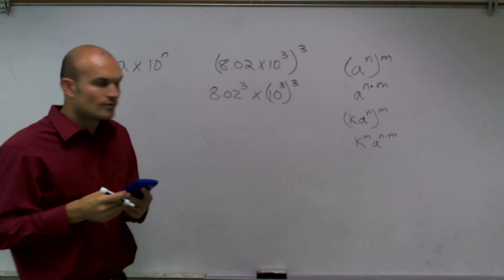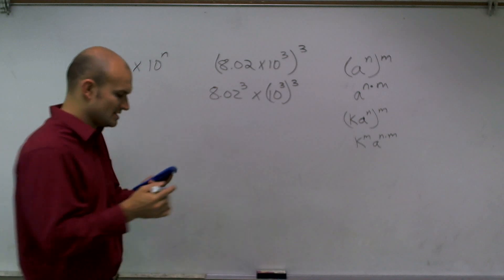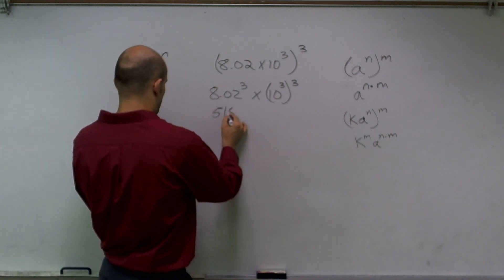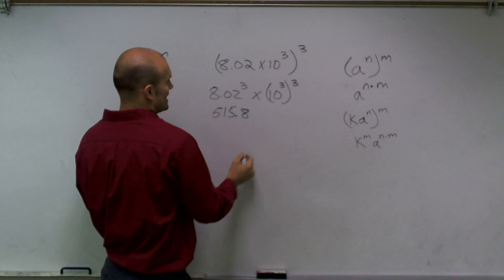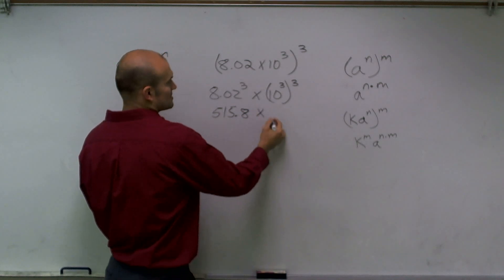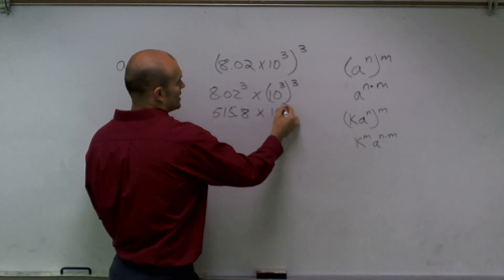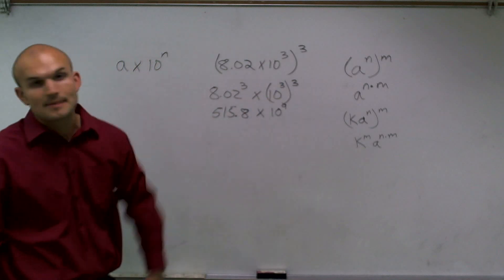And I'm just going to round that to the nearest tenth, which is going to be 515.8 times, and this will be times 10 to the ninth power, 3 times 3 equals 9.